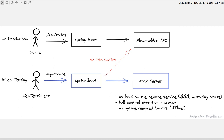We also usually don't have full control of the response. For integration tests we might want to verify how our application behaves if a remote system returns a 500 or responds quite slowly — which is hard to achieve when connecting to the real API. Furthermore, our tests would rely on the uptime of that remote system and could become flaky if the remote API has a hiccup over the weekend.